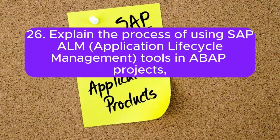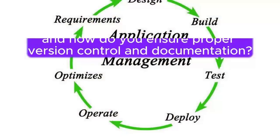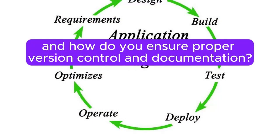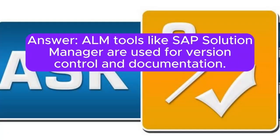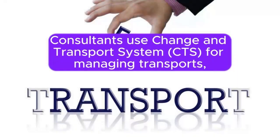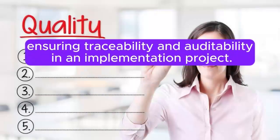Question 26: Explain the process of using SAP ALM (Application Lifecycle Management) tools in ABAP projects, and how do you ensure proper version control and documentation? Answer: ALM tools like SAP Solution Manager are used for version control and documentation. Consultants use the Change and Transport System (CTS) for managing transports, ensuring traceability and auditability in an implementation project.